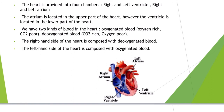We have two kinds of blood in the heart: the oxygenated blood and the deoxygenated blood. The oxygenated blood, which is clear from its name, is oxygen-rich and CO2-poor. The deoxygenated blood is CO2-rich and oxygen-poor. Some students have the misconception that oxygenated blood contains only oxygen and no carbon dioxide — this is incorrect. Oxygenated blood is oxygen-rich, but this doesn't mean there is no carbon dioxide.